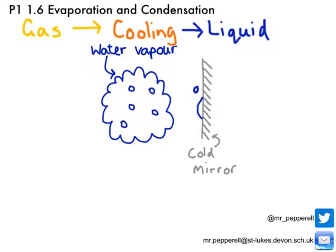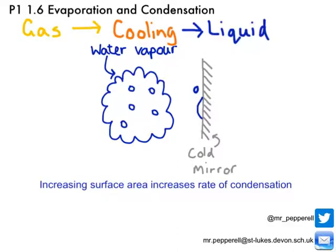As with evaporation, there are a couple of things that can affect the rate of condensation. Firstly, if you had a giant mirror in your bathroom, there's obviously more surface area for the steam to condense onto. So the first thing we can say is: increasing surface area increases the rate of condensation.